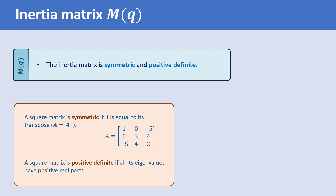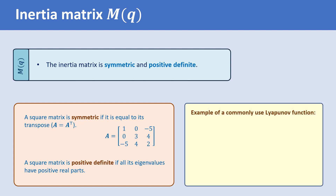This property is frequently used in stability analysis using the Lyapunov Stability Theorem. In future lectures, we will use a Lyapunov function that contains the term Q̇ᵀ M(Q) Q̇. Note that this function is positive definite in Q̇, meaning it is only zero when Q̇ = 0 and positive for all other Q̇. This is because the matrix M is symmetric and positive definite.